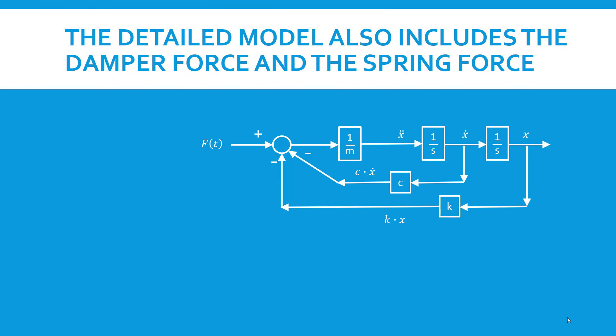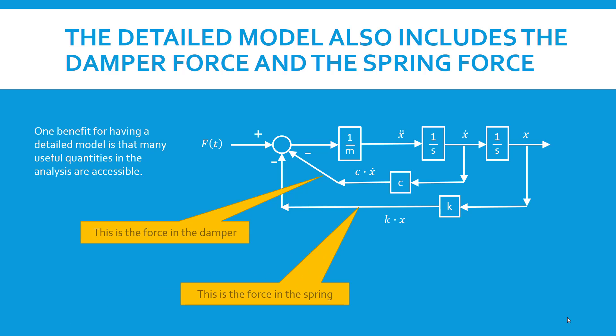There are a couple of features worth pointing out. One benefit that we get from modeling in a detailed fashion like this is that we have access to some quantities that may be useful to us. For instance, the result of the multiplication by the C block times x dot is the force in the damper. And the result of the multiplication of k onto x is spring force. In Simulink, we could attach scopes to these and plot these two forces as a function of time.